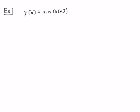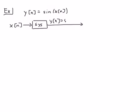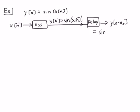Let's go through our analysis scheme. We take x(n), pass it through the system, and get y(n) = sin(x(n)), because that's how the system is defined. Now suppose we delay that by n0 points and get y(n - n0), which will simply be sin(x(n - n0)).